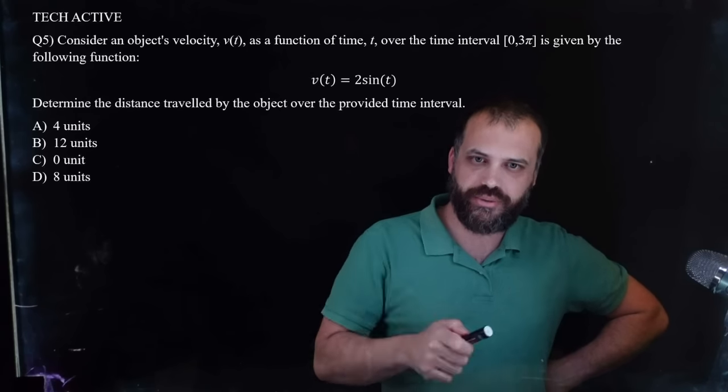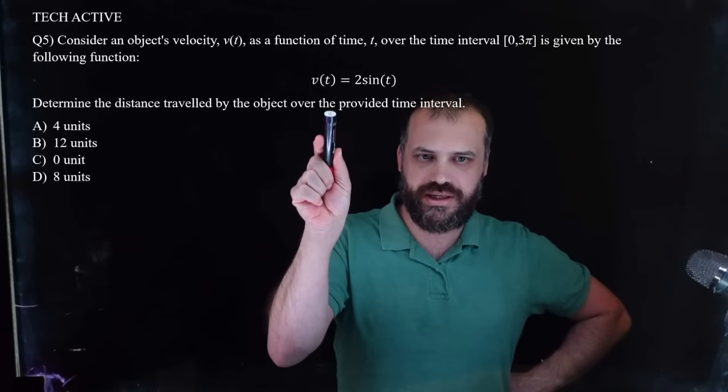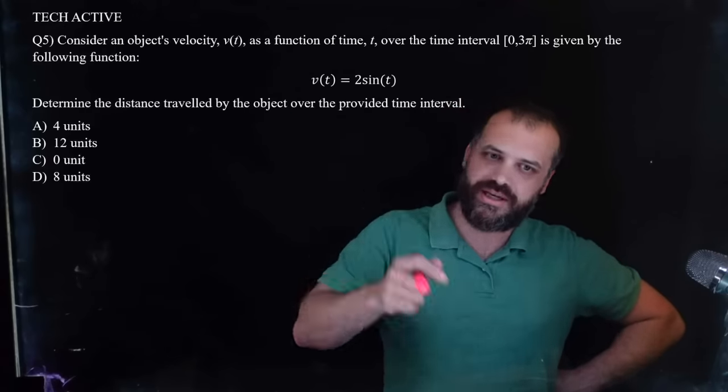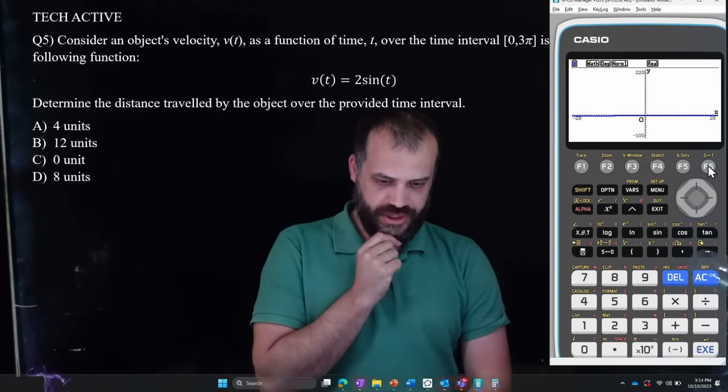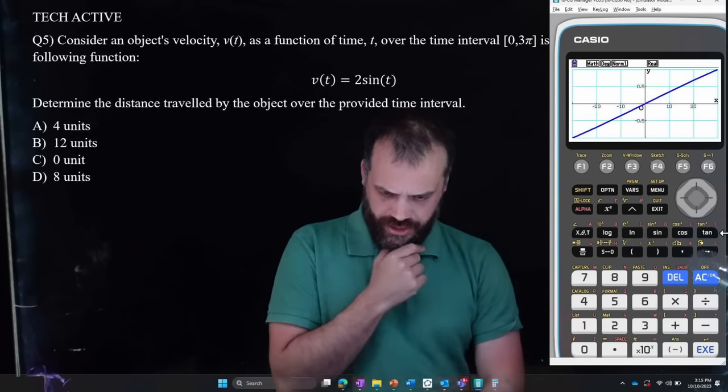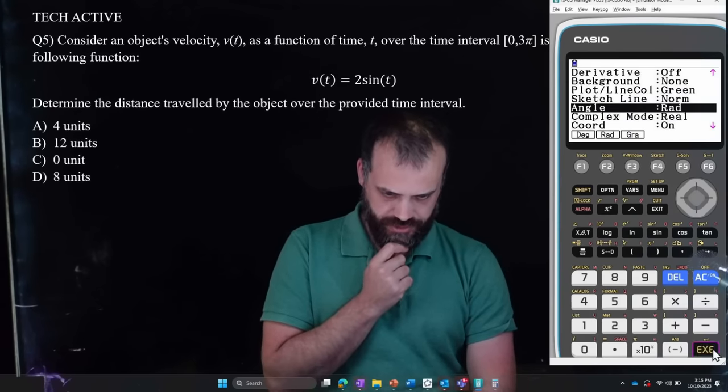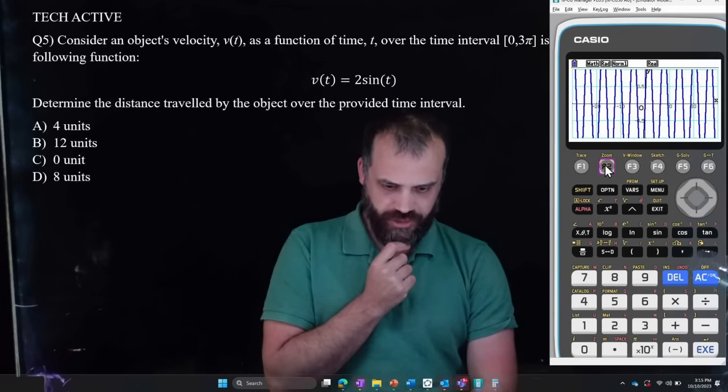Next question. What have we got? An object's velocity is given by this function between 0 and 3π. Oh, this is a Tech Active one. I've got a function. Maybe I should just graph it. So I've done it. 2 sine x. Let's graph that. See what it looks like. Oh dear. Why don't we just try and auto zoom. See if that helps. Now, if you're not screaming at your screen, you should be because it looks like I'm in degrees mode. So let's get into radians mode. There it is. Radians. Let's try it again. Oh, there we go.